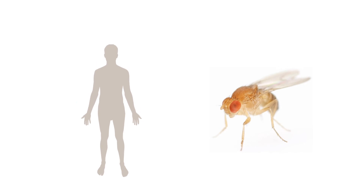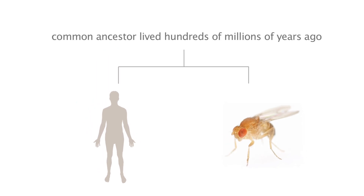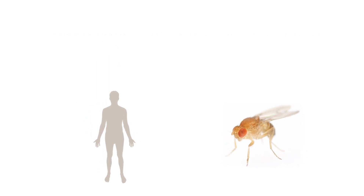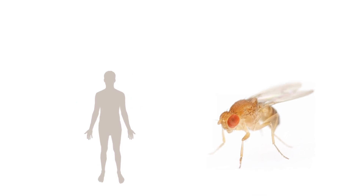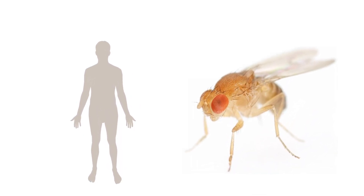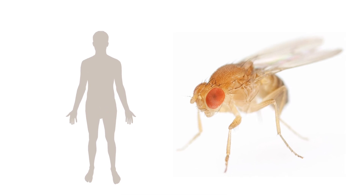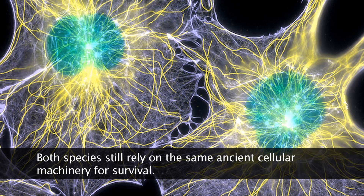Humans and fruit flies are both descended from a common ancestor, an animal that lived hundreds of millions of years ago. It turns out that in many, if not in all cases, both species still rely on the same ancient cellular machinery for survival.